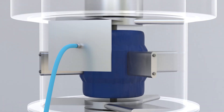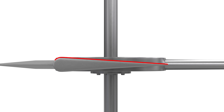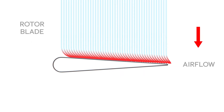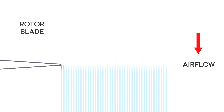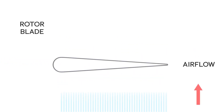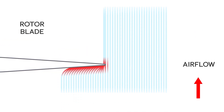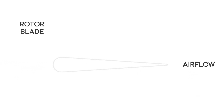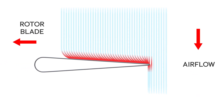This is feasible because of the symmetrical shape of the rotor blades. As the air hits the rotor blade, most of the flow is deflected in one direction and pushes the blade in the opposite direction. Due to the symmetrical shape of the rotor blades, the same effect happens when the airflow comes from the other direction.